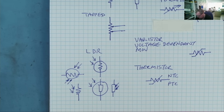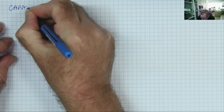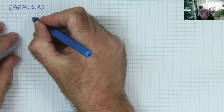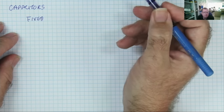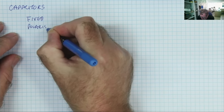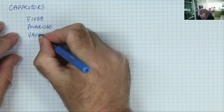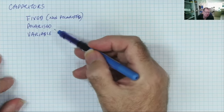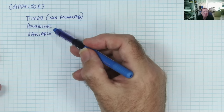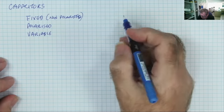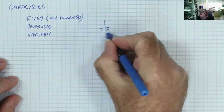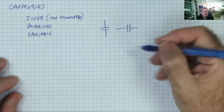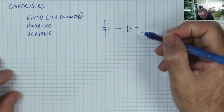Let's look now at the next common passive component: capacitors. With capacitors there are probably fewer symbols and variants. Capacitors generally come in three types: fixed non-polarised, polarised — these are your electrolytic capacitors — and variable, which you only really find in radio frequency circuits. The basic symbol for a capacitor is two parallel lines. It could be horizontal or vertical. That is your fixed non-polarised capacitor. We then have the polarised ones — electrolytic and polymer and similar capacitors.